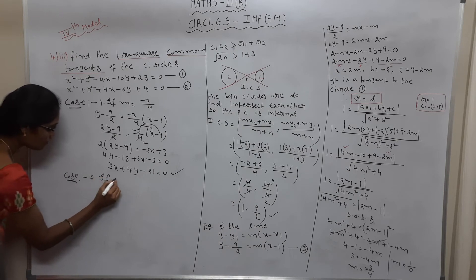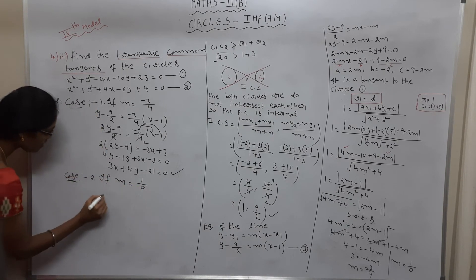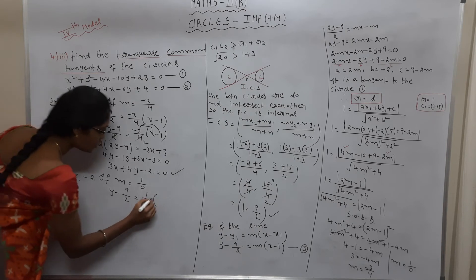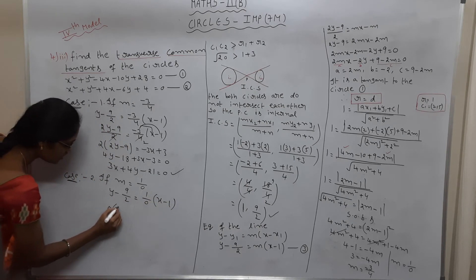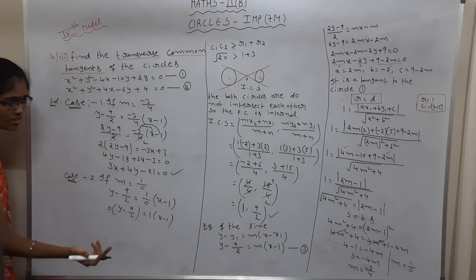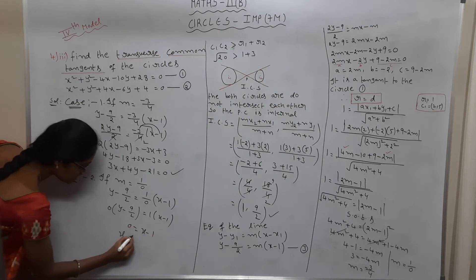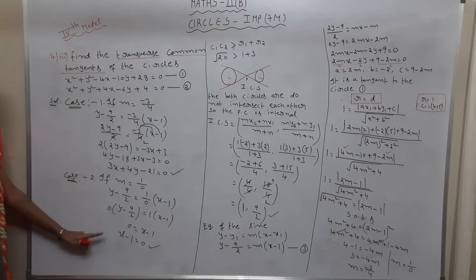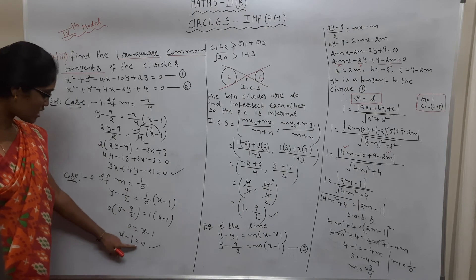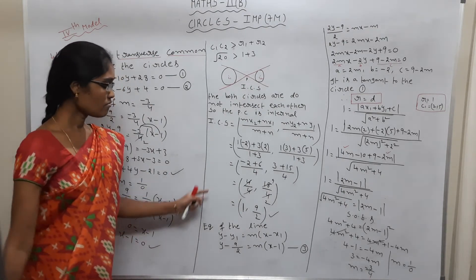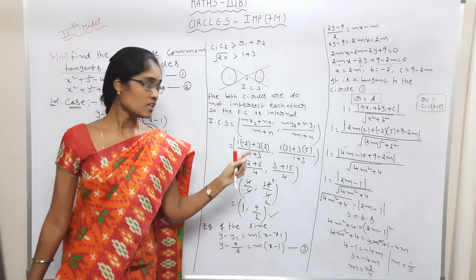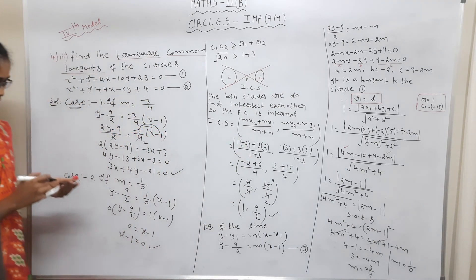Case 2: m = 1/0 (vertical line). From the equation: 0 × (y − 9/2) = 1 × (x − 1), so x − 1 = 0. The two transverse common tangent lines are: 3x + 4y − 21 = 0 and x − 1 = 0. These are the two required transverse common tangents. This type of sum is very important — please note it down.